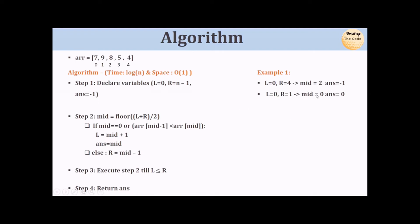Now left is 0, right is 1, so middle is 0. Since middle is 0, we are in the increasing sequence — we set left to mid+1, so left becomes 1, and answer becomes 0. Next, left is 1, right is 1, middle is 1. We compare index 0 (value 7) with index 1 (value 9) — increasing sequence — so left becomes 2 and answer becomes 1. Now left (2) exceeds right (1), so we return answer = 1, meaning 9 is the largest element.